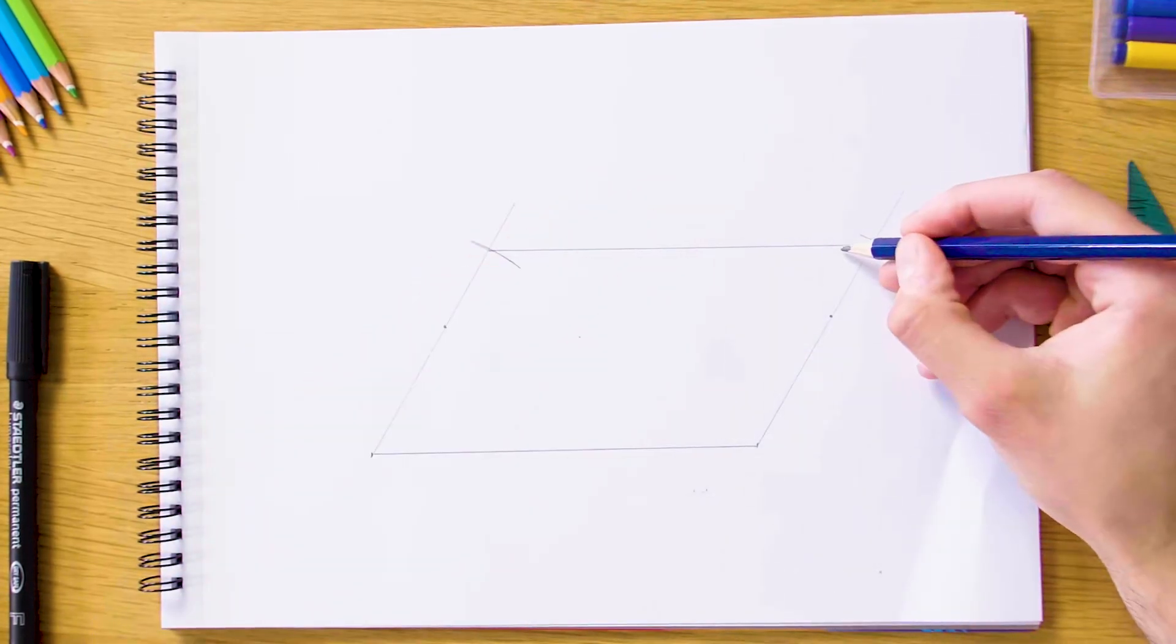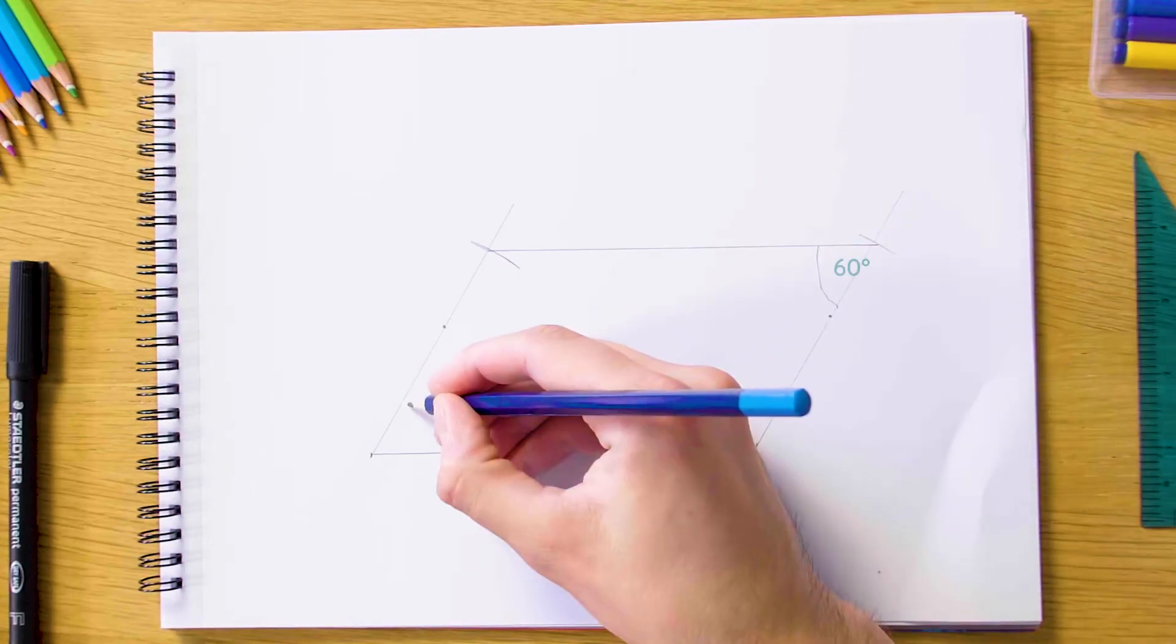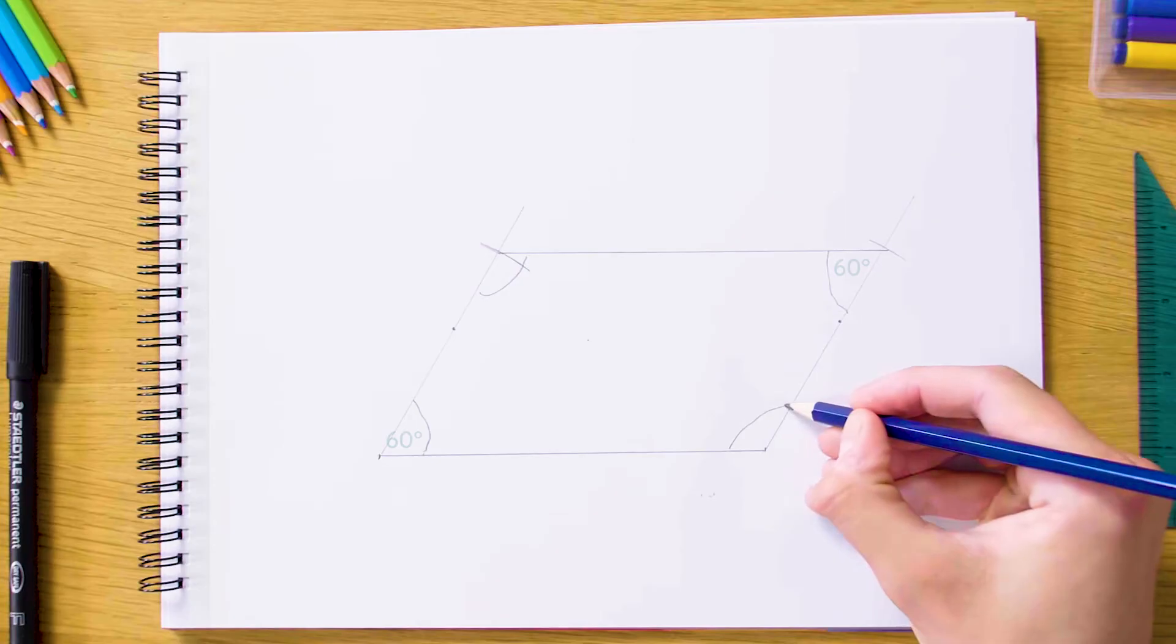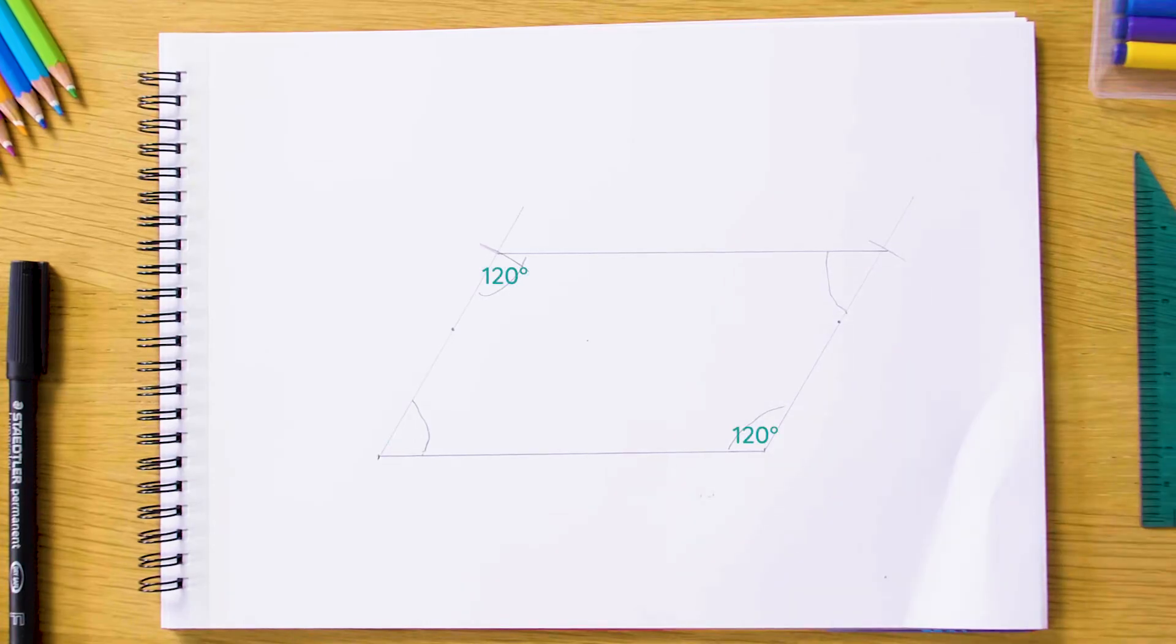And our opposite angles are equal as well. So this angle is going to be equal to this angle down here and we can see the same thing for our other two angles as well. So that is it for this construction and I'll see you next time.